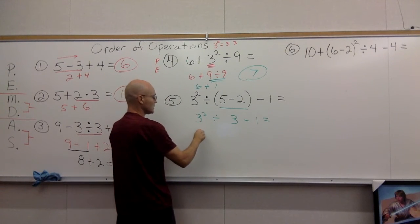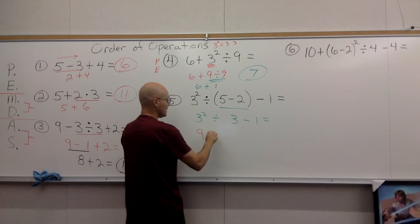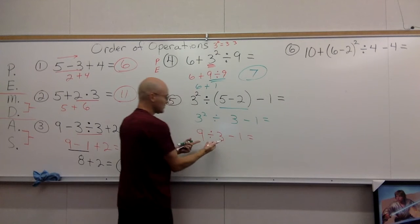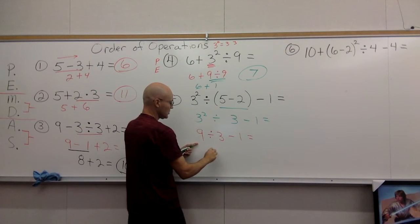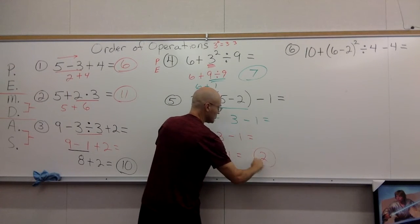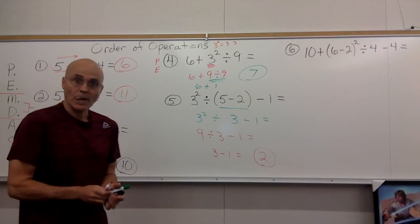The exponent goes next, which gives you 9. 9 ÷ 3 - 1. Then division is more important than subtraction, and you wind up with 3 - 1 with a final answer of 2.